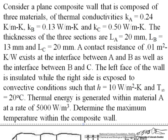We're going to consider a plain composite wall composed of three materials with different thermal conductivities. We're given the thicknesses of the three sections as well as contact resistances that exist at the interface between A and B as well as the interface between B and C.